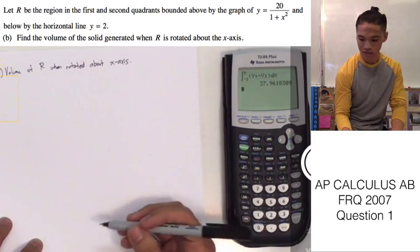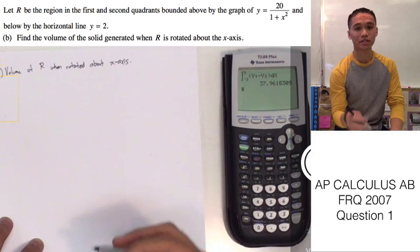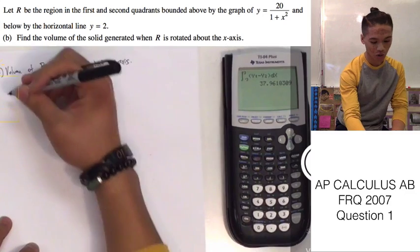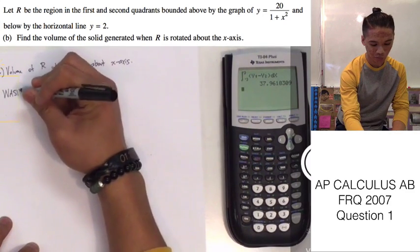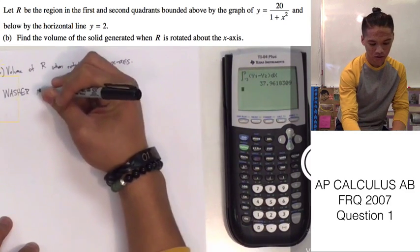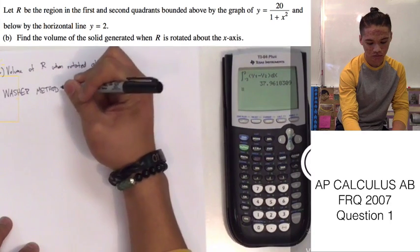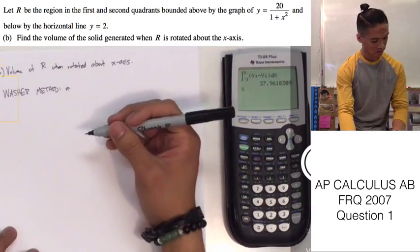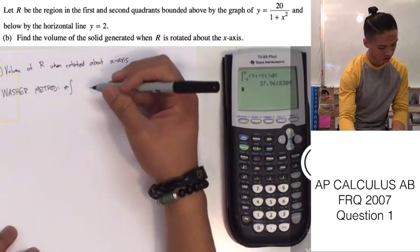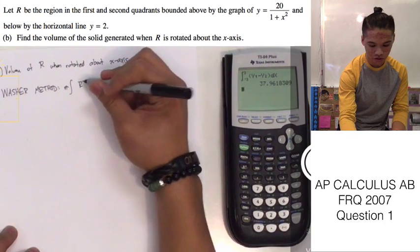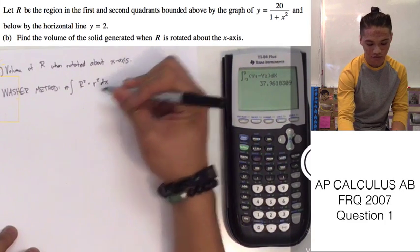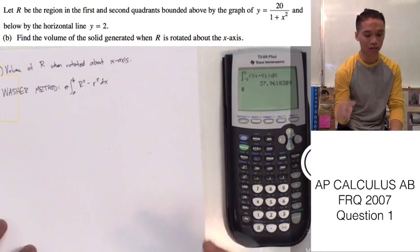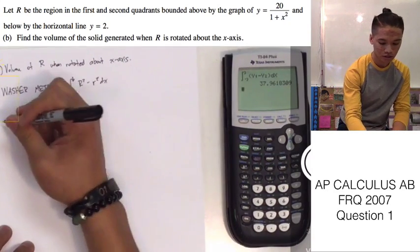And for this, since we know that our bottom function isn't the x-axis itself, then we're going to have to use the washer method to find the volume, and the washer method is the function of pi times the integral of big R squared minus little r squared dx from A to B. So, our A and B are already given in the problem. Well, not given in the problem, but we solved for them. They're the points of intersection.